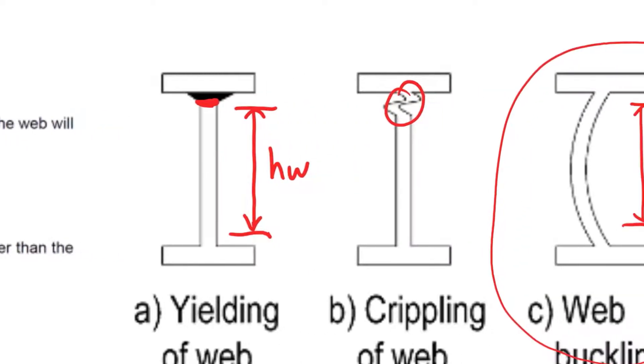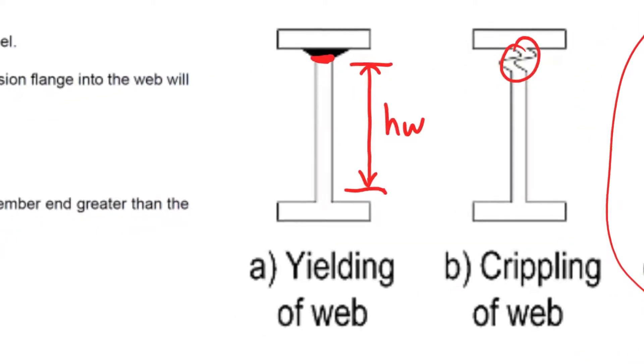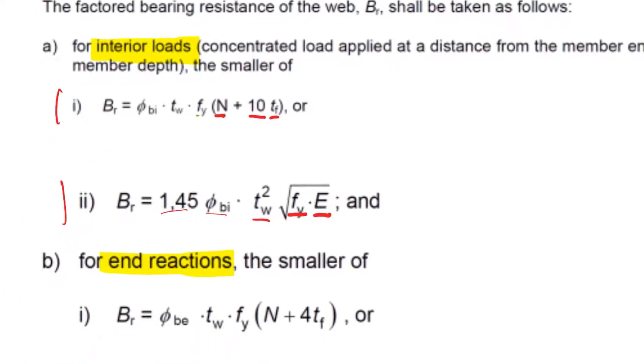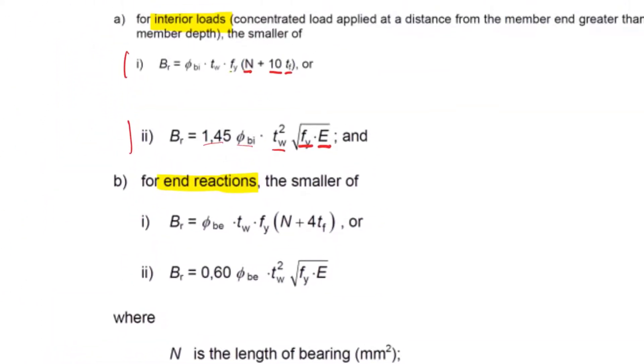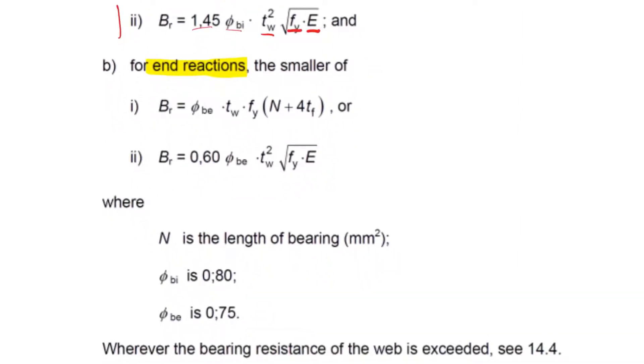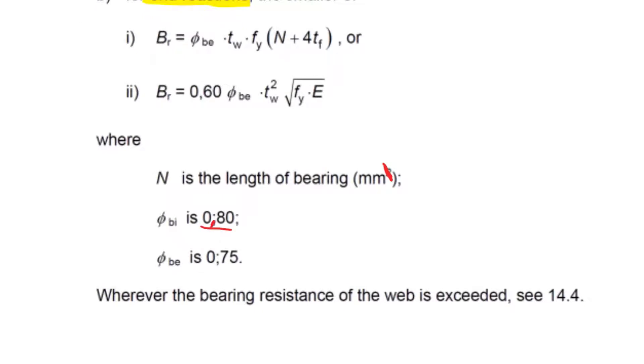Either of these could govern - it could cripple or yield. First you check web buckling, then check if either of these is possible. N is the length of bearing. Just be careful, there are mistakes in the text - that should be a comma, not a semicolon. Those are partial factors 0.75 and 0.8.